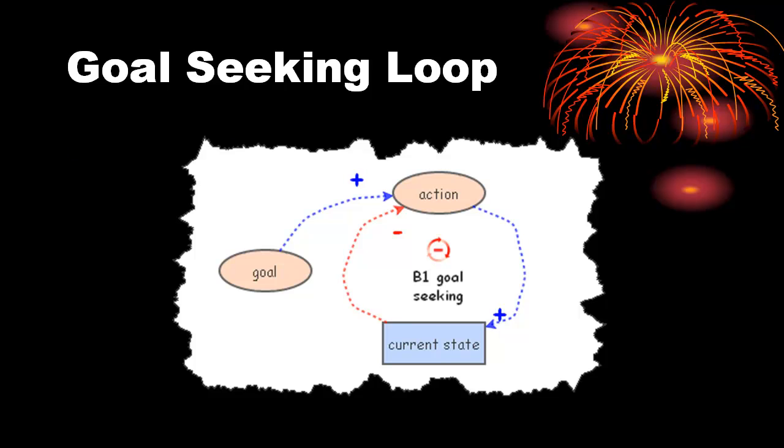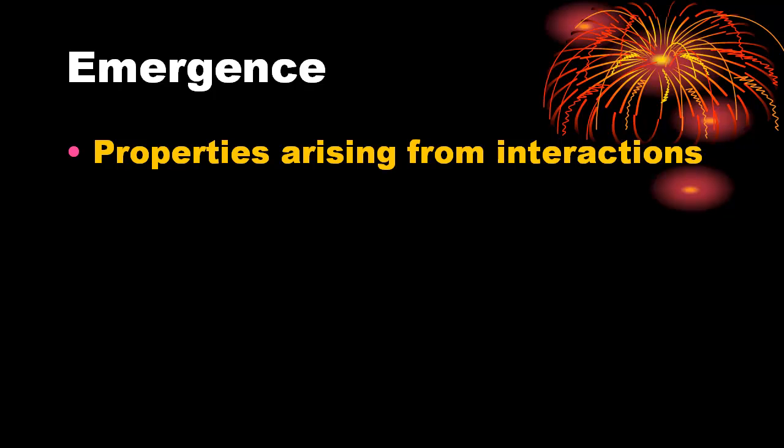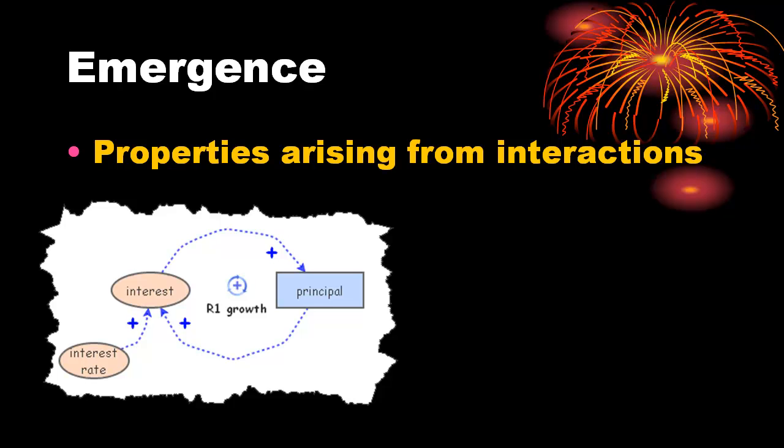Emergence is the concept that properties arise from the interactions within the system that are not part of any of the individual elements of the system itself. The structure for the savings account previously encountered exhibits the characteristic of growth, though none of the individual components alone exhibit that characteristic. Growth is an emergent characteristic of the set of interactions within the system.